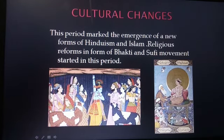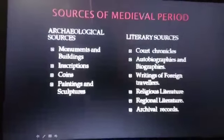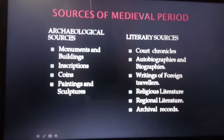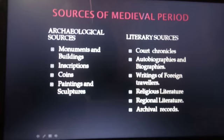Now let's move to our next topic: sources of the medieval period. Sources of the medieval period can be divided into two broad heads — first, archaeological sources, and second, literary sources. Archaeological sources include monuments and buildings, inscriptions, coins, paintings and sculptures. Literary sources include court chronicles, autobiographies and biographies, writings of foreign travelers, religious literature, regional literature and archival records. Let us study these sources in detail.